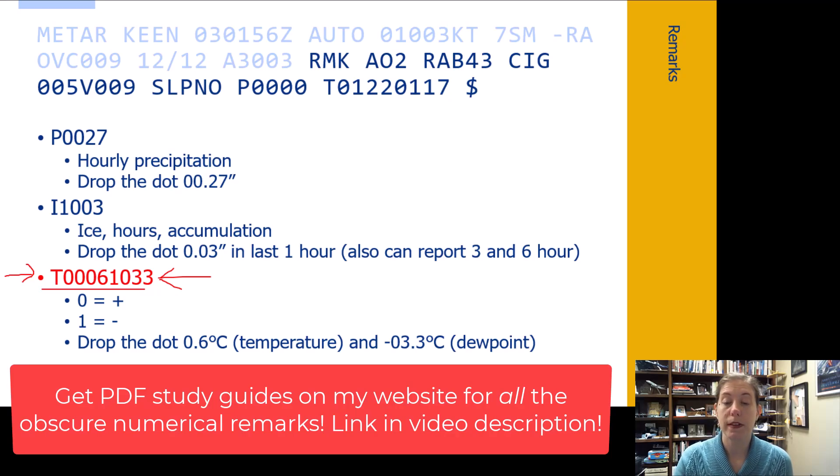The P group we see here, we have the hourly precipitation. They dropped the dot, but we put it back so that we can read it and we get 0.27 inches of rain has fallen. So here in this one, we do have a light rain happening at this airport, but in the last hour, it must've just started raining because no precipitation has actually accumulated here. It makes sense because rain started, it looks like at 43 minutes past the hour.